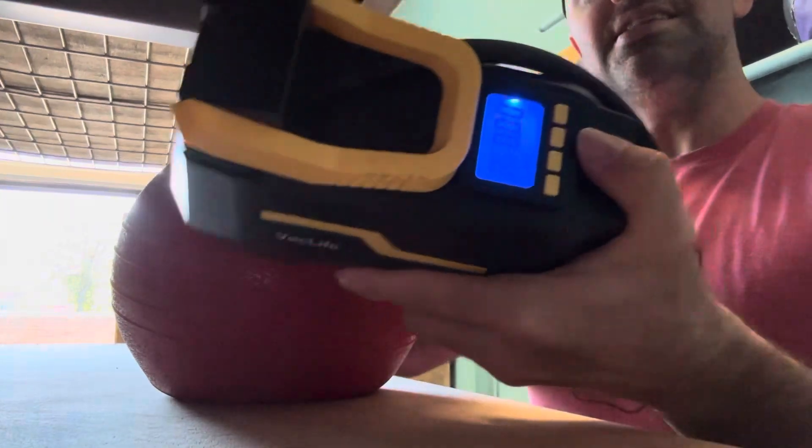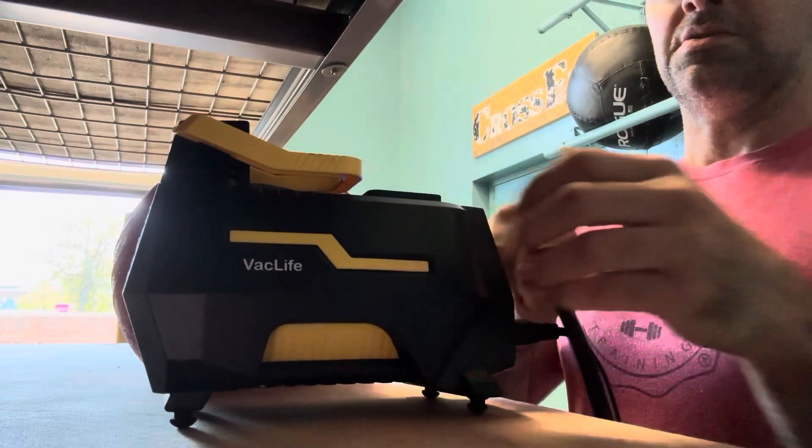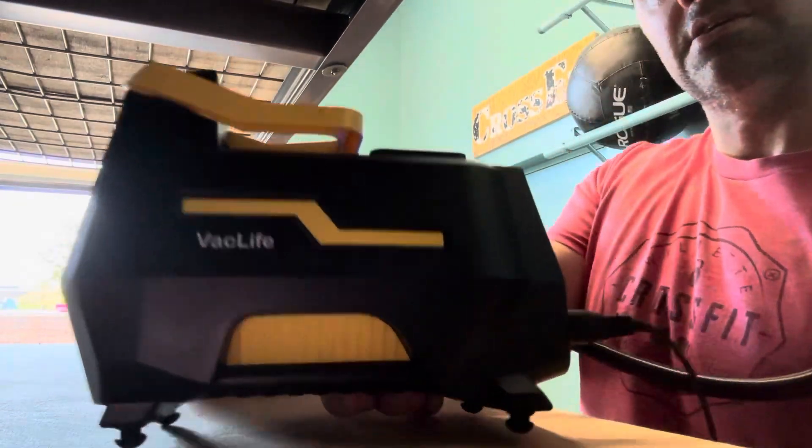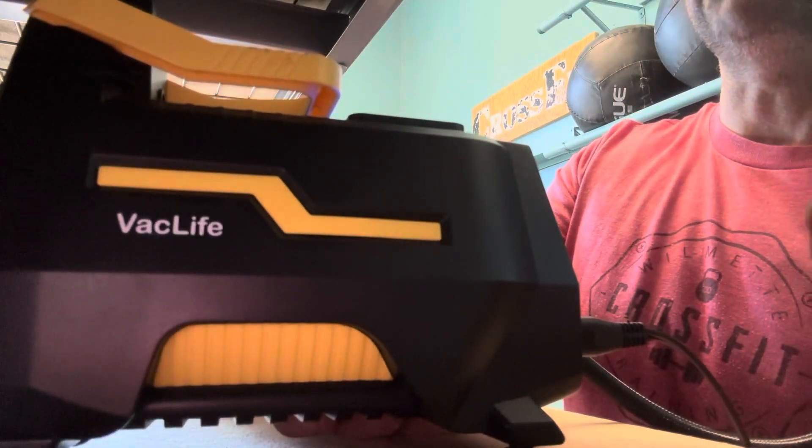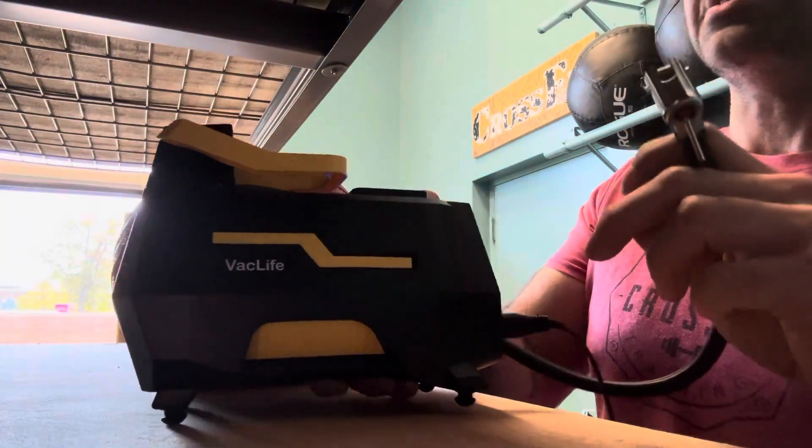So we take the automatic air pump here, just like so. I think I bought this one off Amazon. It looks like a VacLife. I think it was like 40, 50 bucks. This is the perfect thing for slam balls.